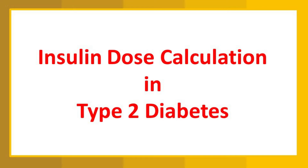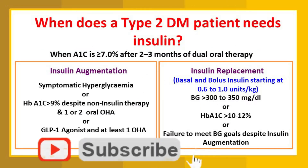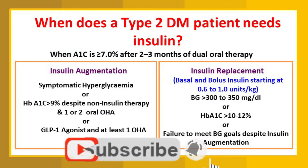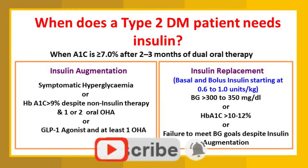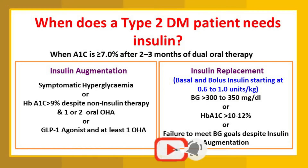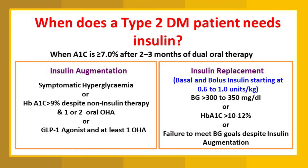For a type 2 diabetes patient, when does he require insulin? If his HbA1c level is greater than 7% even after two to three months on dual oral hypoglycemic agents, we can start insulin. There are two regimens: first is insulin augmentation therapy, where insulin is just started, and then comes insulin replacement therapy when augmentation fails.